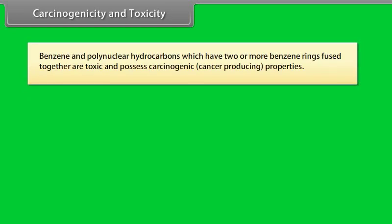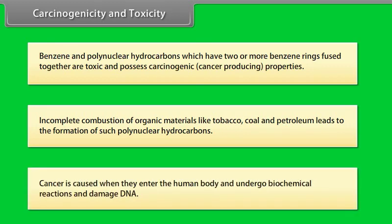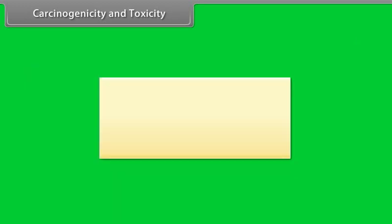Carcinogenicity and toxicity. Benzene and polynuclear hydrocarbons, which have two or more benzene rings fused together, are toxic and possess carcinogenic or cancer-producing properties. Incomplete combustion of organic materials like tobacco, coal and petroleum leads to the formation of such polynuclear hydrocarbons. Cancer is caused when they enter the human body and undergo biochemical reactions and damage the DNA. Some of the carcinogenic hydrocarbons are...